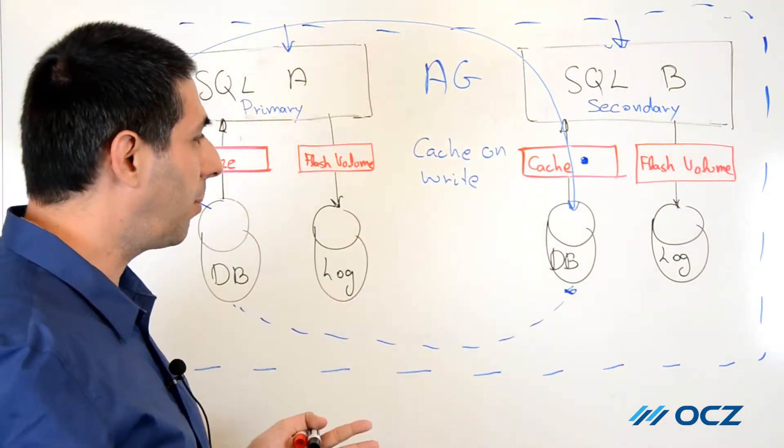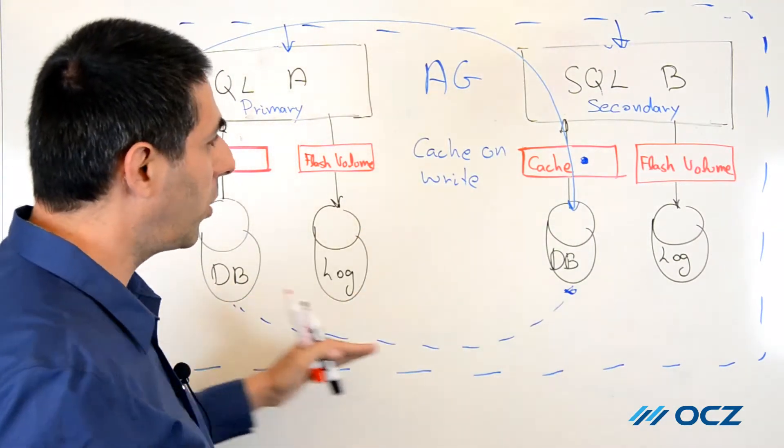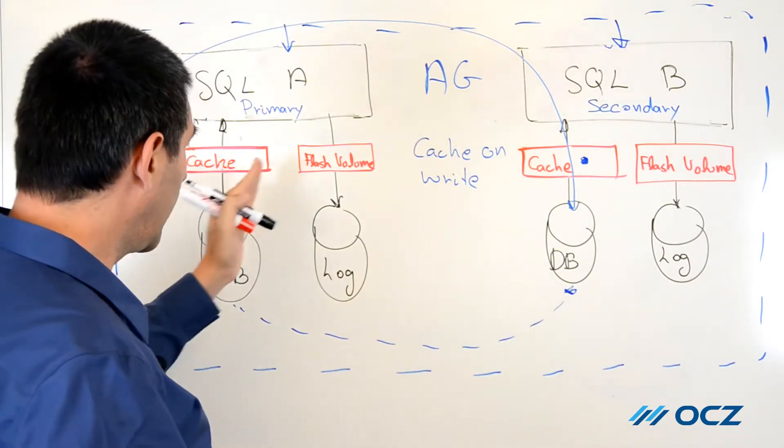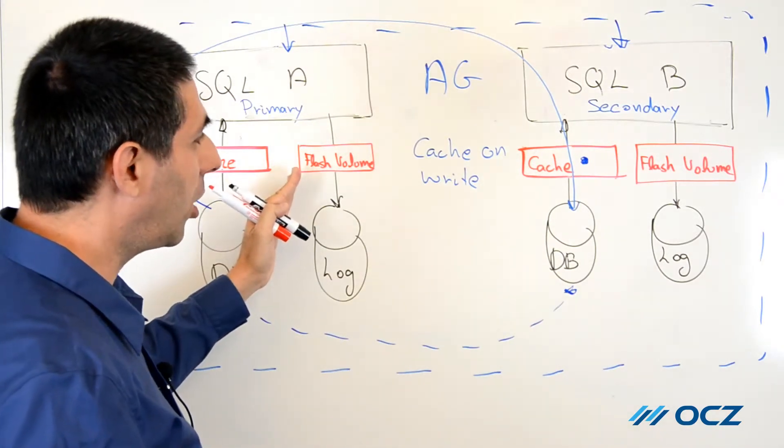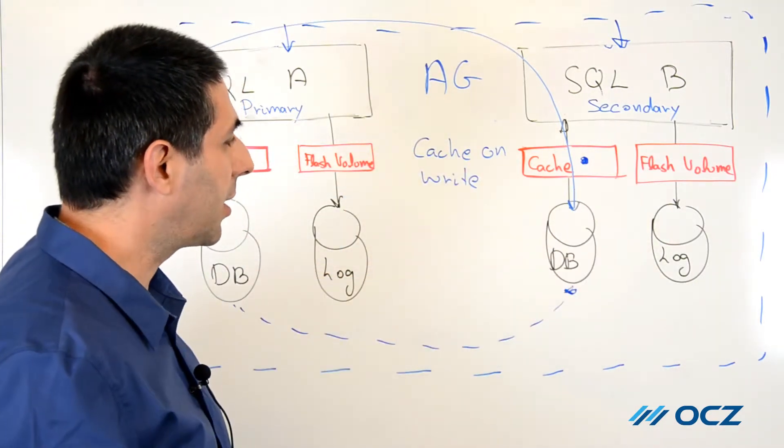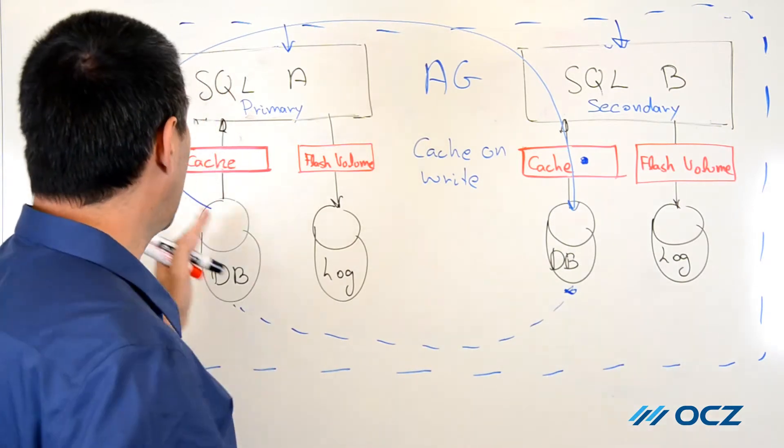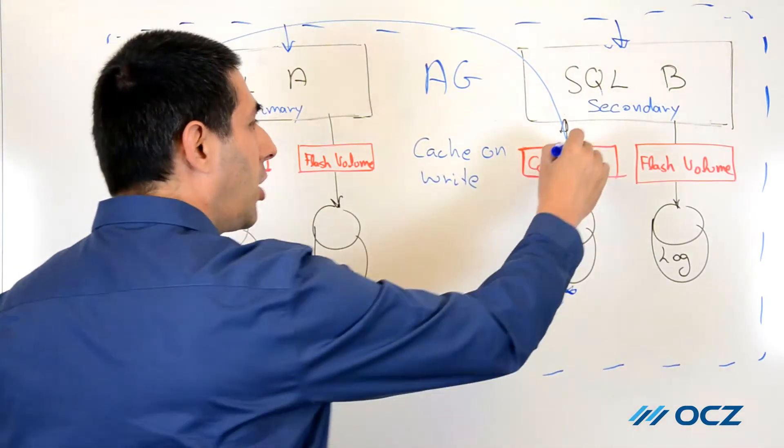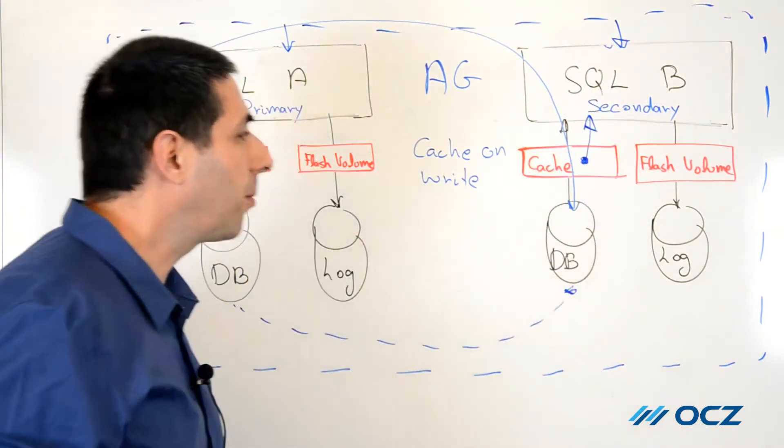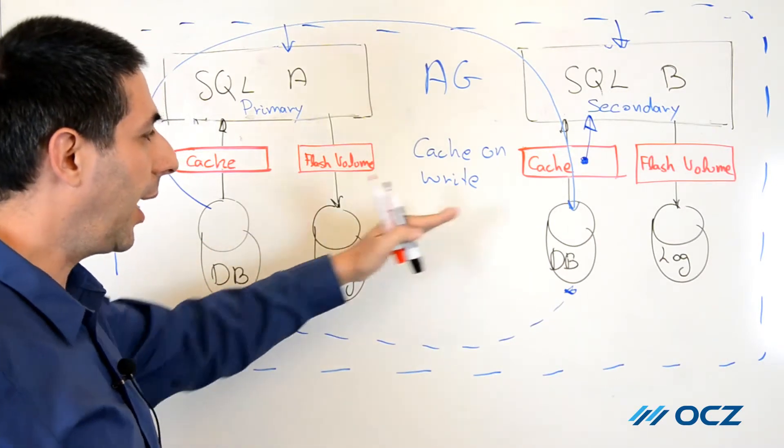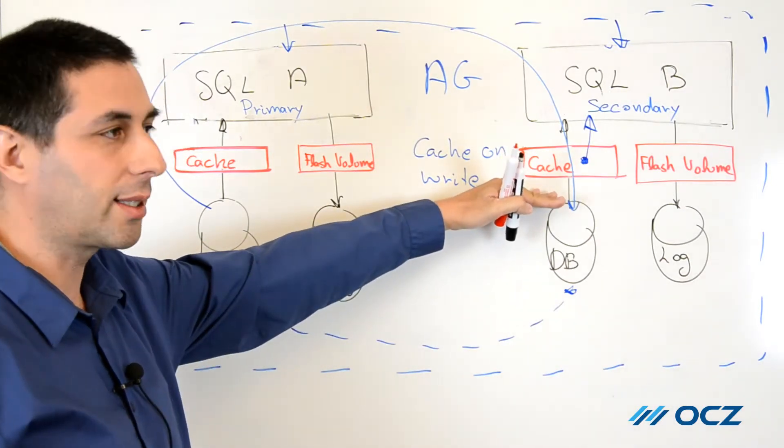So we have the best of all worlds. Because of the always-on technology, we have high availability. The data on the flash volume of the log or database is replicated to the secondary sites, and the data from the database is inserted to the cache and fetched from the fast flash media. So we have both high availability and performance using the ZDXL.